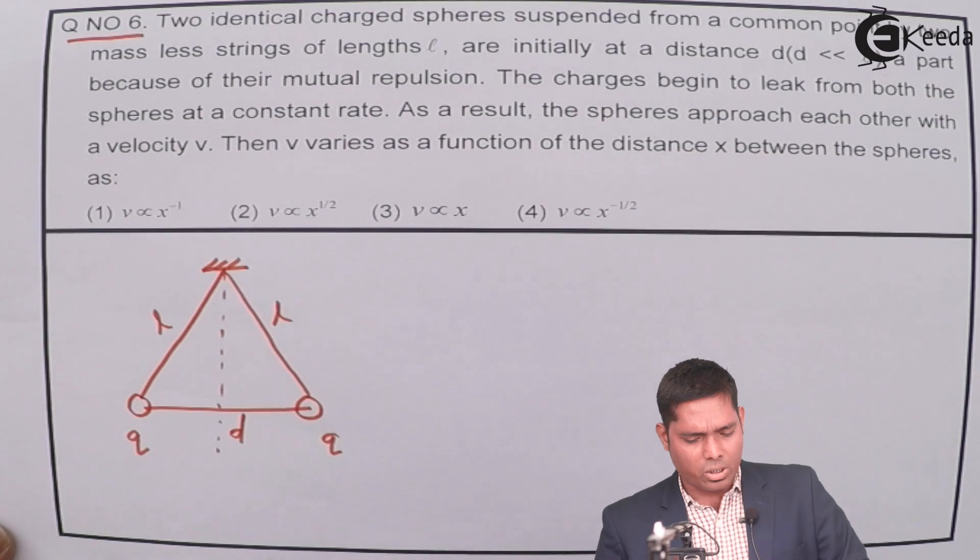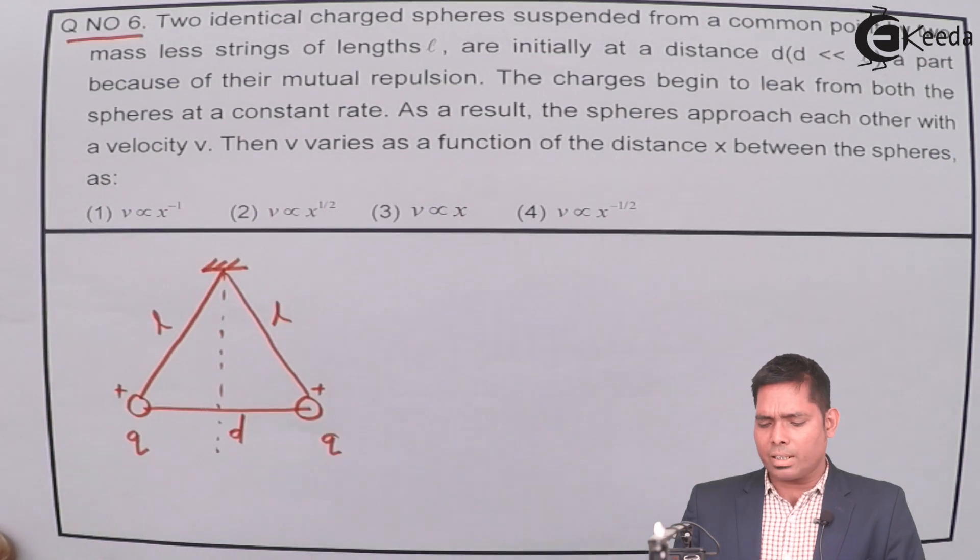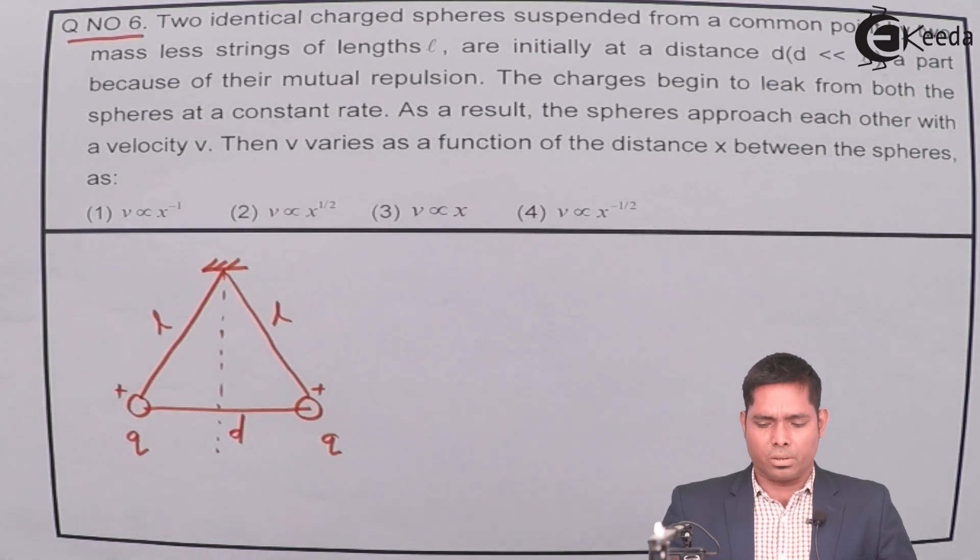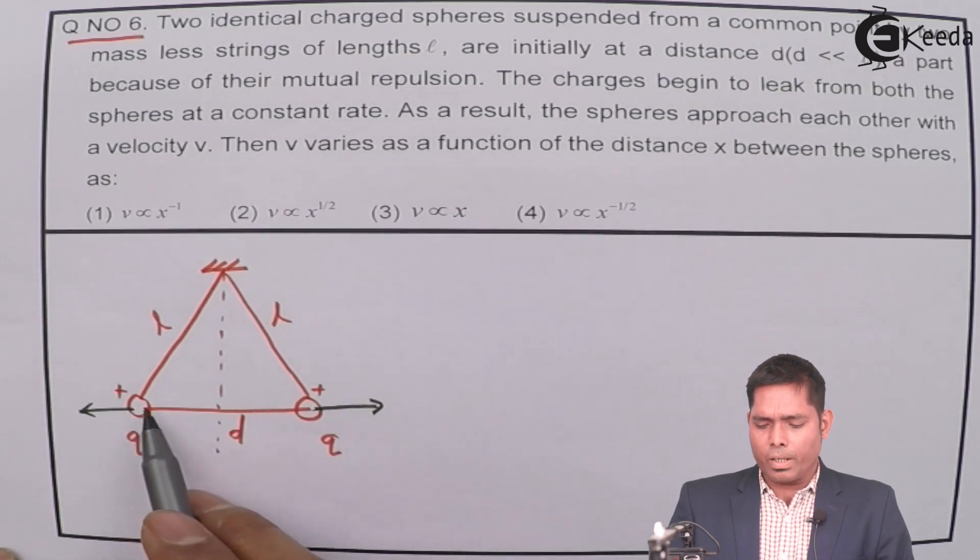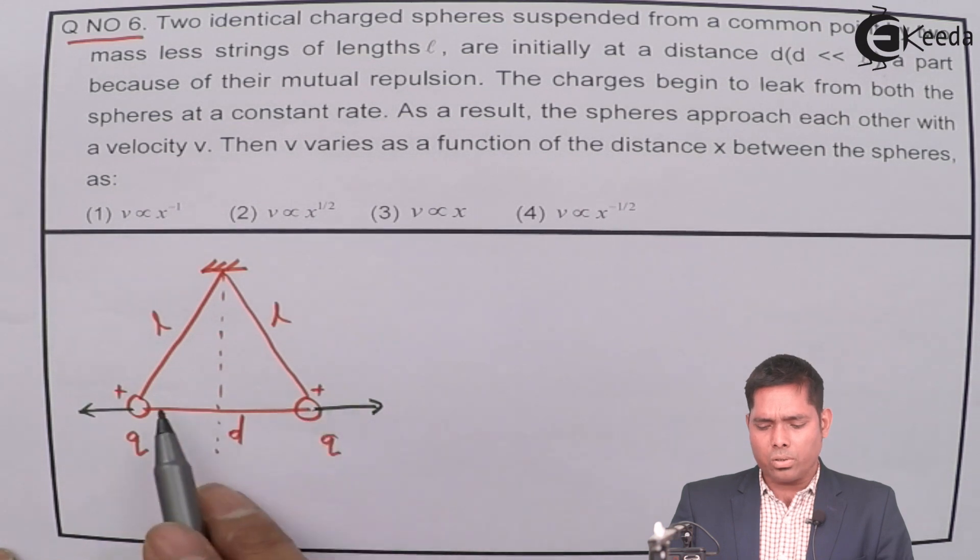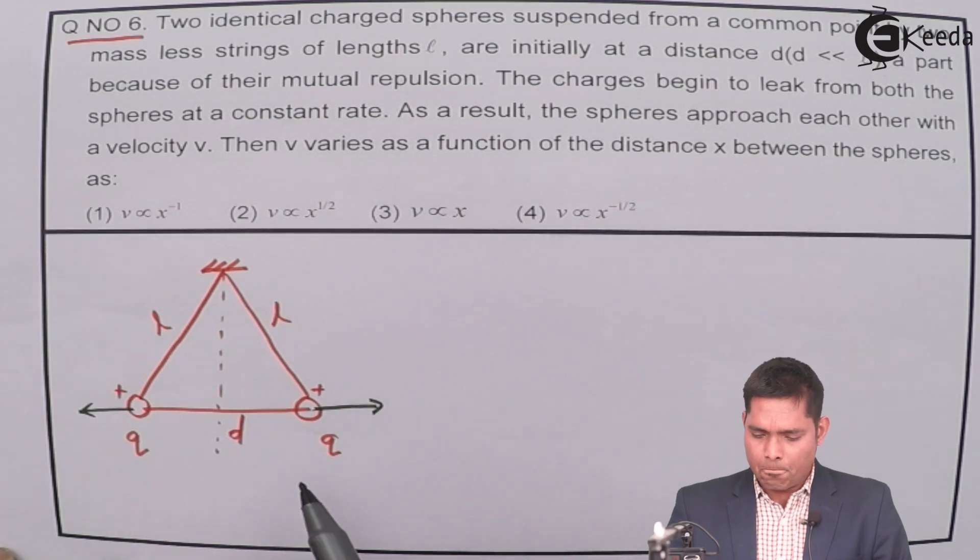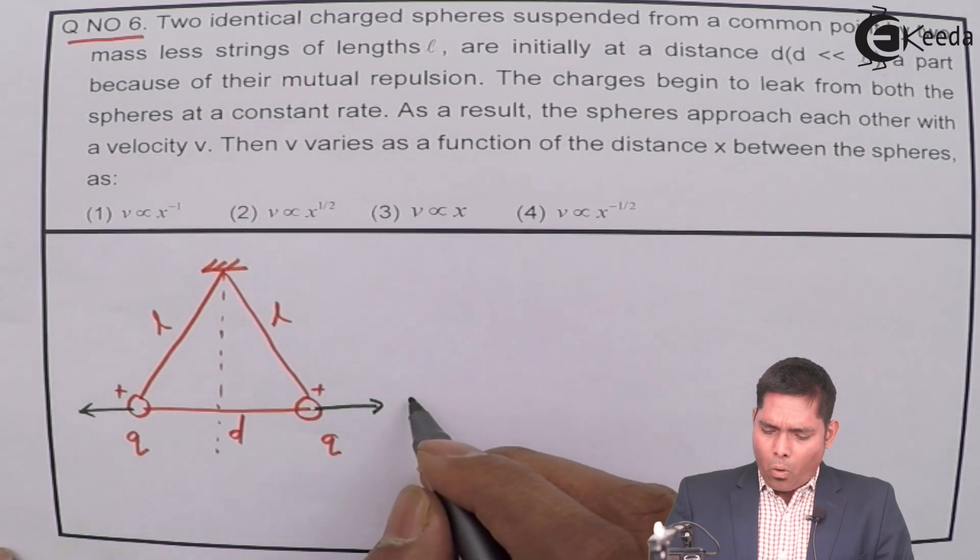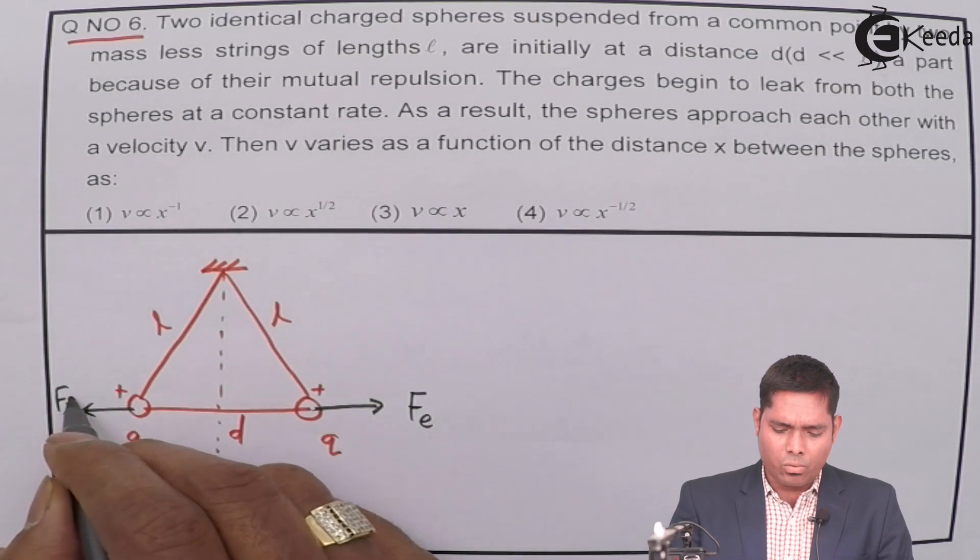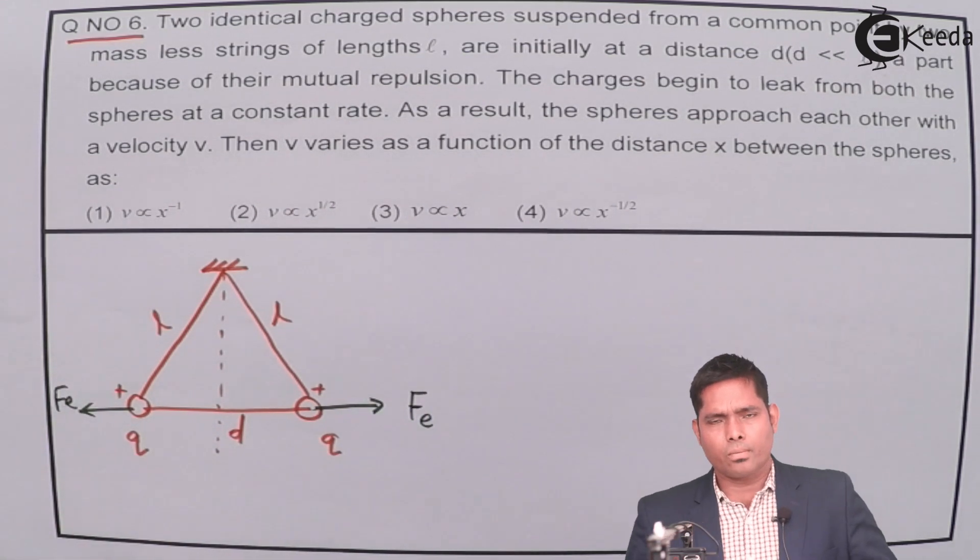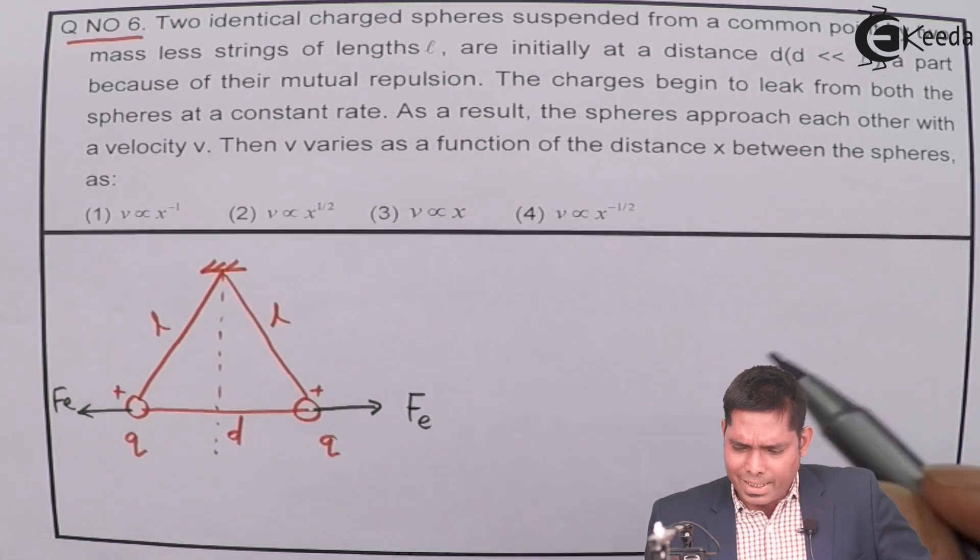Firstly, the situation is that we have two identical charged spheres. They are suspended from common point by strings of length L, each having charge Q separated by a distance D. Identical charge, suppose that this is positive, this is positive. So the force that is acting on both the spheres are in this direction. This one will repel this and this one will also repel this. This is the force of repulsion acting on the two charged bodies.